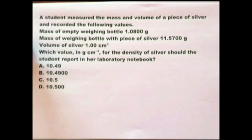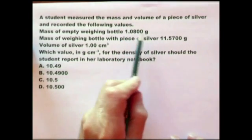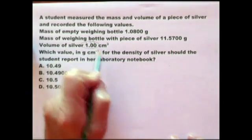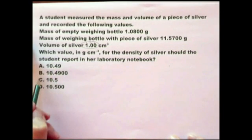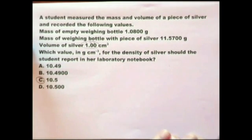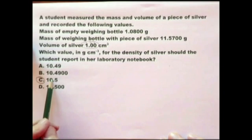When you're doing a calculation which involves a multiplication or a division, the number with the least number of significant figures determines the number of significant figures in the answer. Looking through this, some numbers have a lot of significant figures, but here you've only got three significant figures. Therefore you look for three significant figures in the answer, and that's 10.5. It can only be 10.5. You don't have to do the calculation — certainly do not do the calculation.